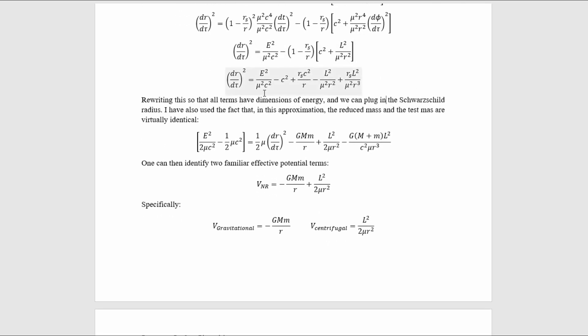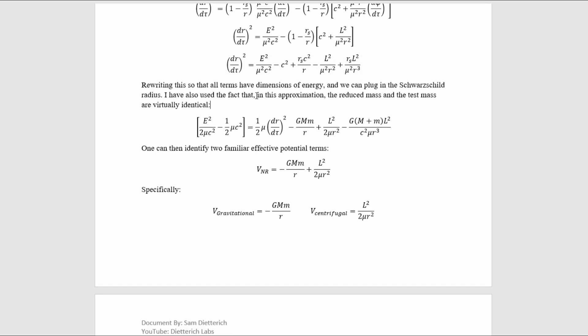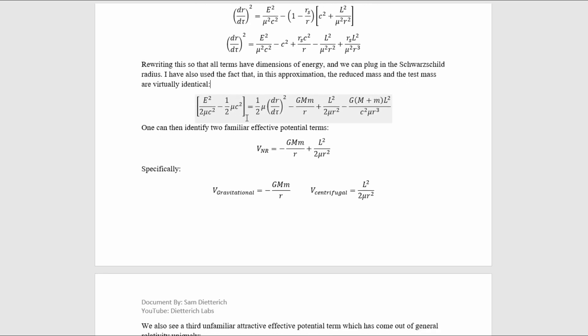Now we can rewrite this so that all the terms have dimensions of energy, and we can also insert the formula for the Schwarzschild radius. I also use the fact that in this approximation the reduced mass and the test mass are virtually identical, so we ultimately have this answer. We see that there are a number of different types of energy terms here, including three potential terms right here.